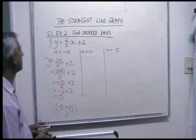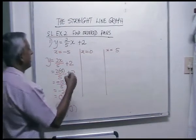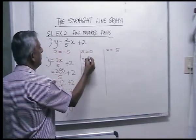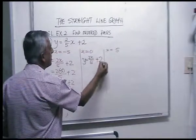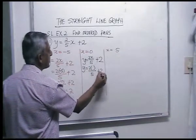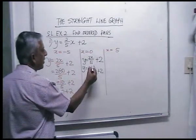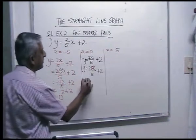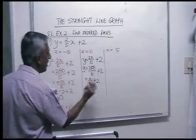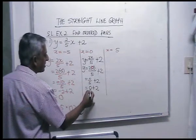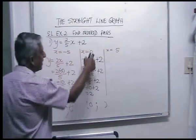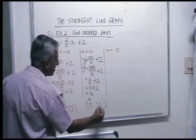If you notice a mistake anywhere in these DVDs, please send me an email. For x is zero: two times zero is zero, over five plus two. Zero divided by any number is zero, so zero plus two is two. Your ordered pair is x is zero, y is two.